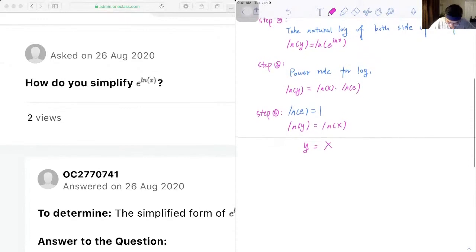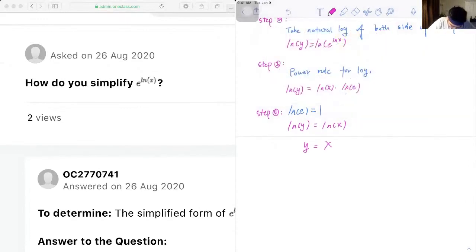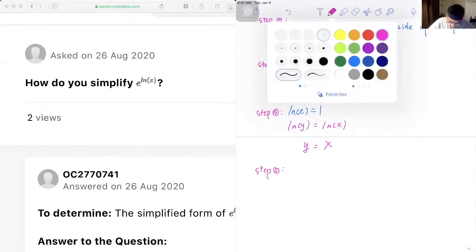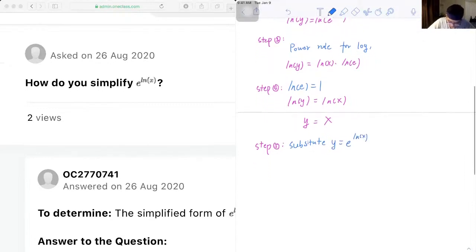And yep, so next step, we substitute y is equal to e to the exponent of log x back into the equation. So we will have e to the exponent of log x is equal to x.